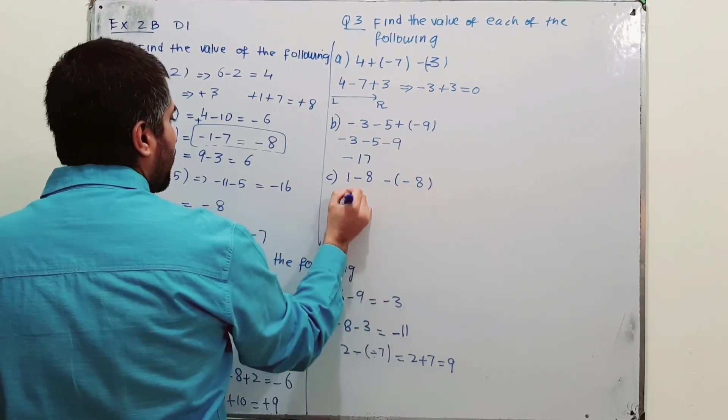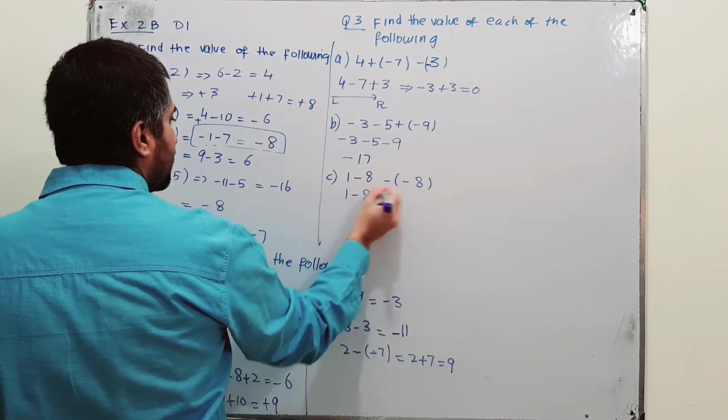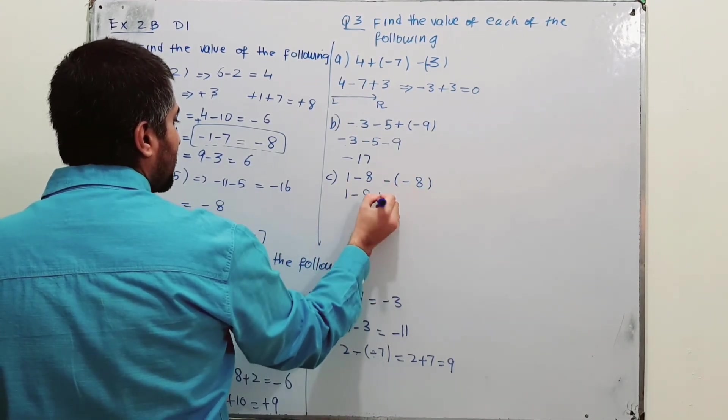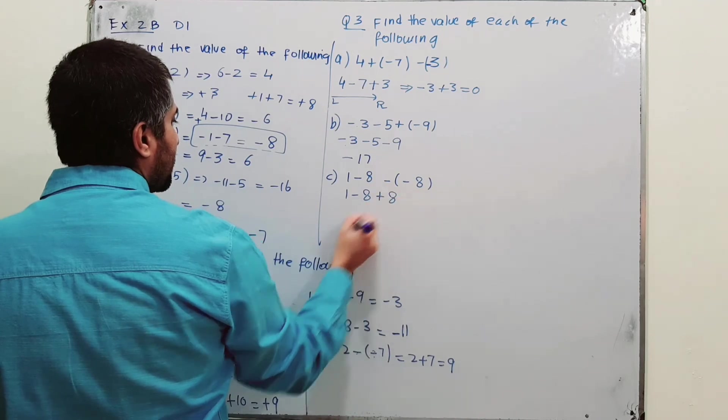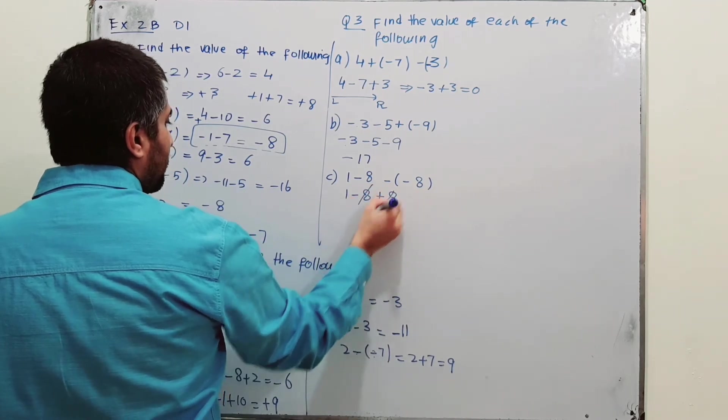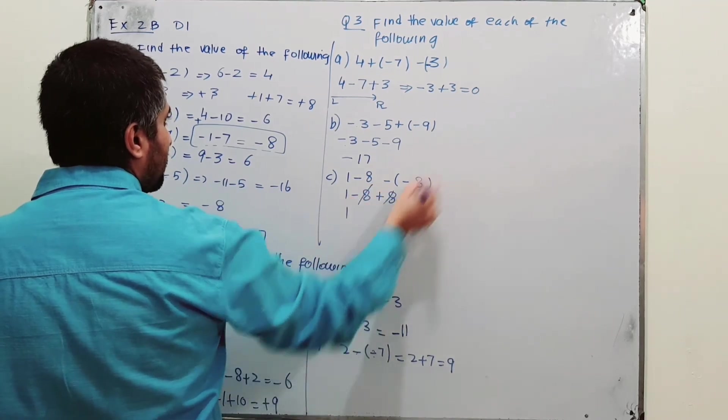Part C: 1 minus 8 minus (minus 8). The minus minus becomes plus 8, so the minus 8 and plus 8 cancel out, leaving the answer as 1.